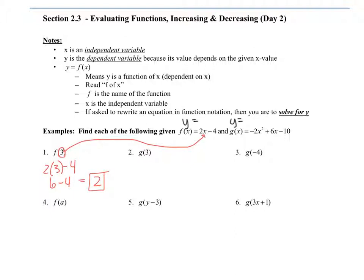Same thing here. This one is asking about the G equation. You're taking the 3 and plugging it in anywhere you see an X — same process. Pretty simple as long as you understand what the notation means. That's the new thing, so be really careful with your negatives here because we're squaring some stuff.